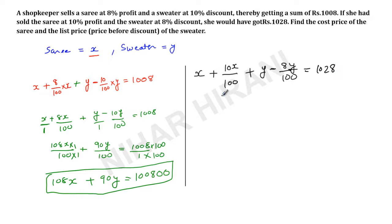Now again I will simplify it. So I will take LCM. This will be 110X over 100. This will be 92Y, 100Y minus 8Y, 92Y over 100, is equals to 1028. Now again I will take LCM. So this will be 110X plus 92Y is equals to 102800. This is my equation number 2.